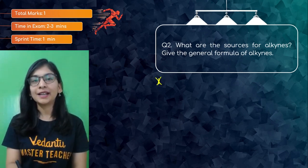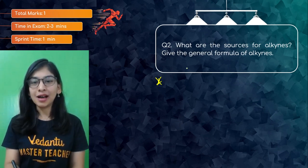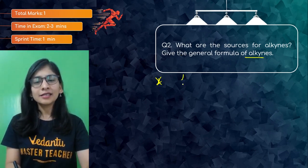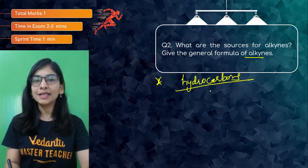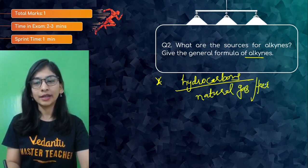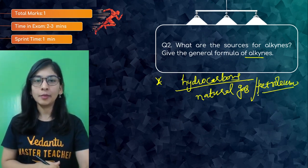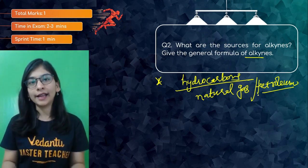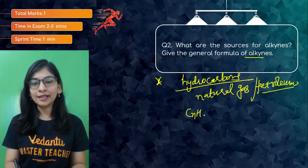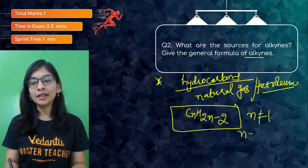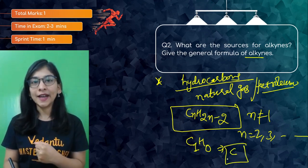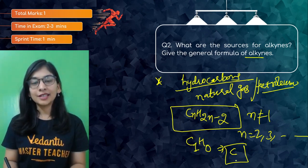Question two: what are the sources of alkynes, and give the general formula. Hydrocarbons come mainly from natural gas and petroleum products. Petroleum is a mixture of many hydrocarbons, and natural gas forms above petroleum. The general formula of alkynes is CnH2n-2, where n starts from 2 — not 1 — because if n=1, you'd get C1H0, which has no hydrogen and cannot satisfy carbon's tetravalency.